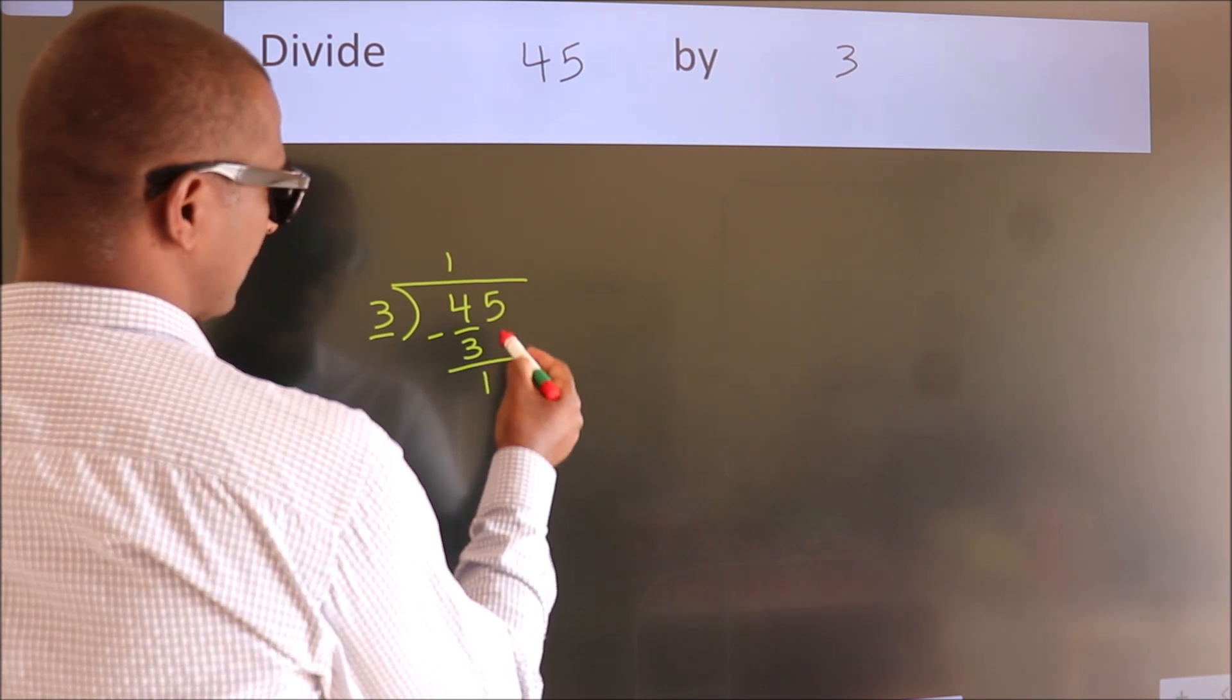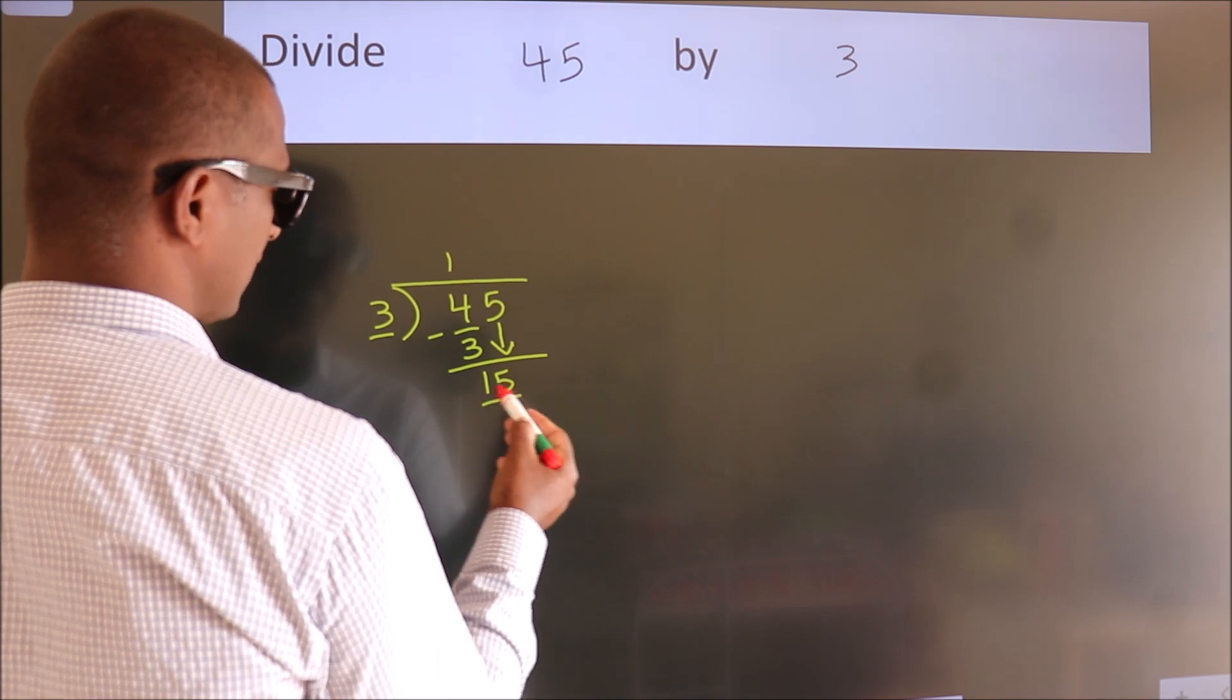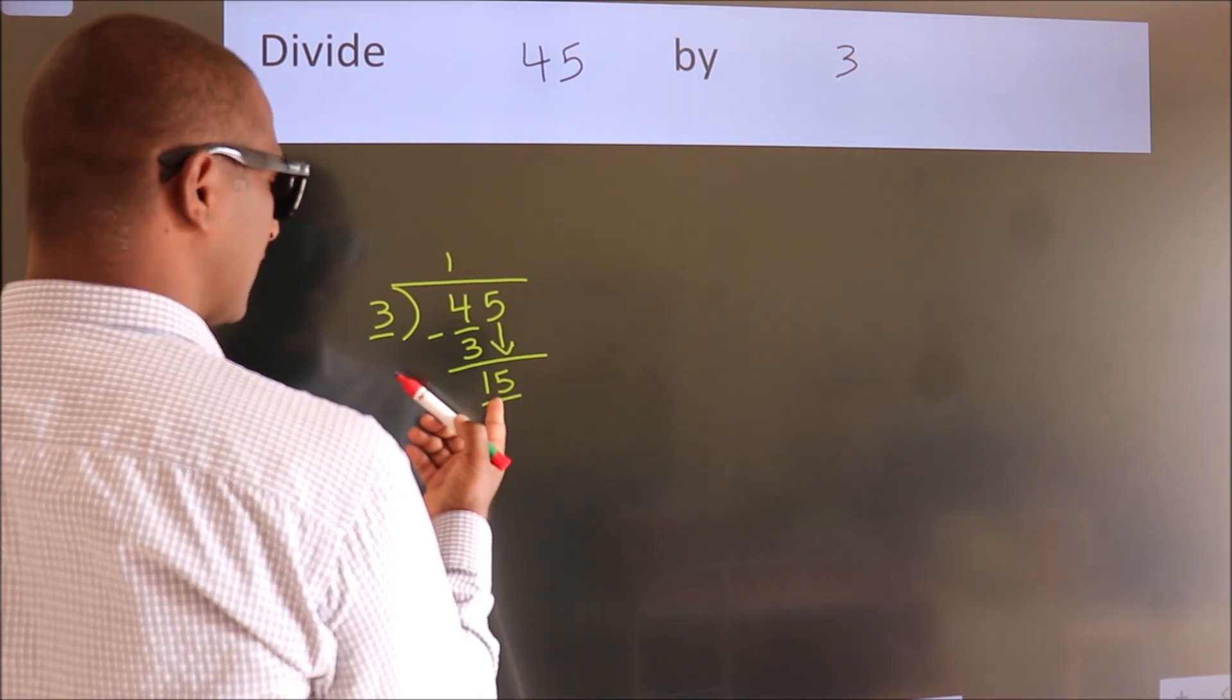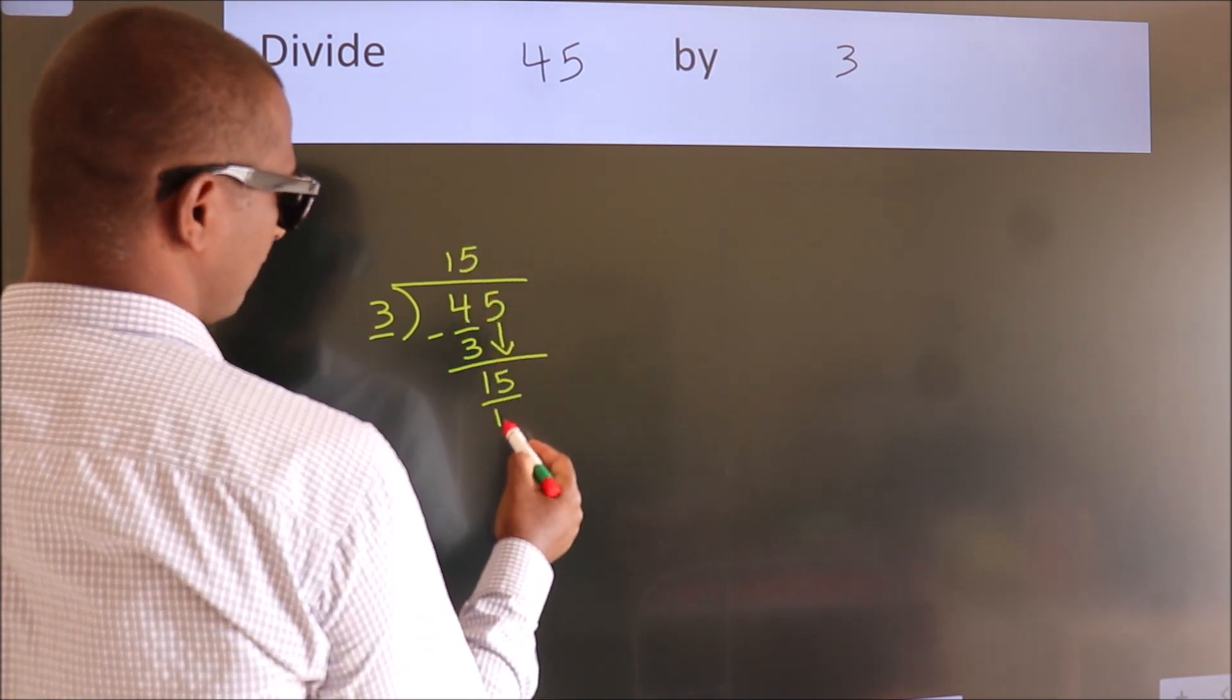After this, bring down the beside number. So 5 down, so 15. When do we get 15 in the 3 table? 3 fives, 15.